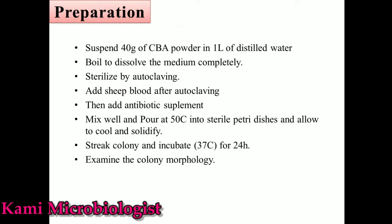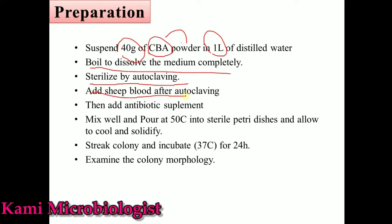To prepare this medium — similar to blood agar and chocolate agar — we take 40 grams of Campylobacter agar powder and dissolve it in one liter of water. We then heat and mix it completely. After that, we sterilize it using an autoclave. After sterilization, we add the sheep blood and then add the antibiotic supplements as discussed previously.